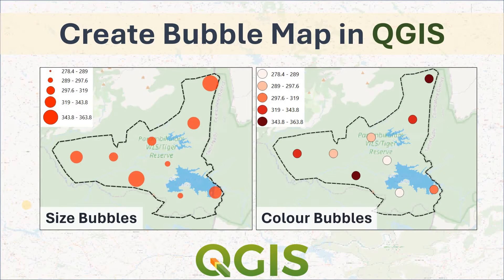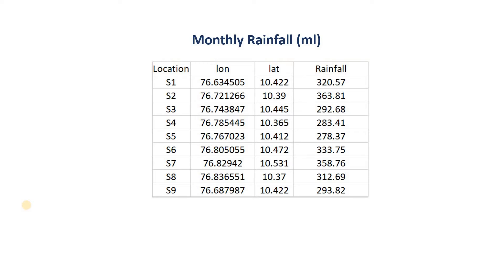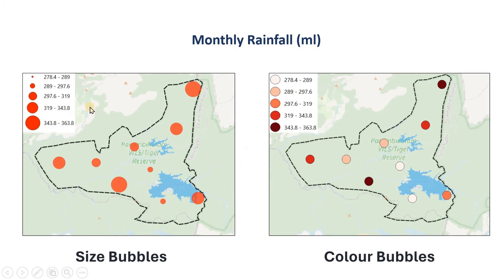Hi everyone, welcome to this short tutorial on creating a bubble map in QGIS. This is the dataset we are going to use for creating our size bubbles and color bubbles. We have nine different locations with corresponding point coordinates and the amount of monthly rainfall received by these locations.